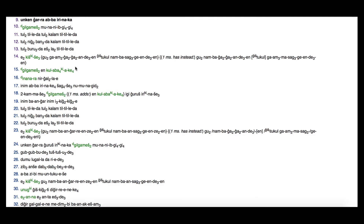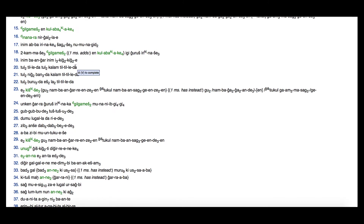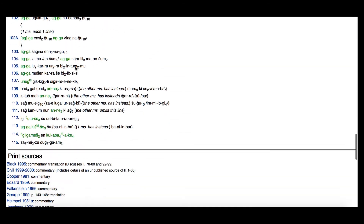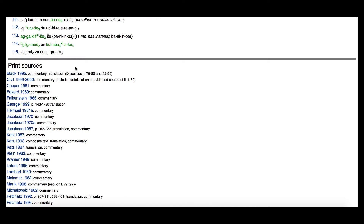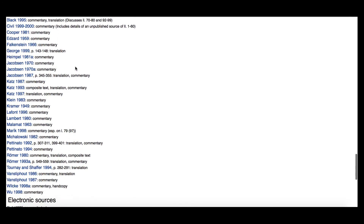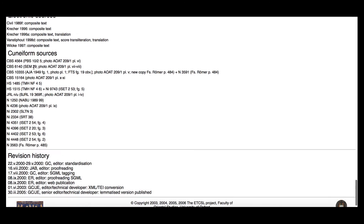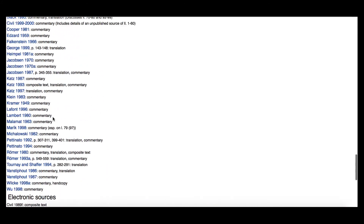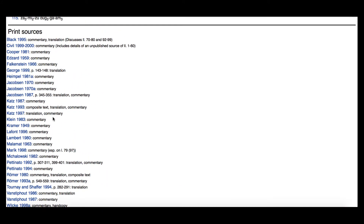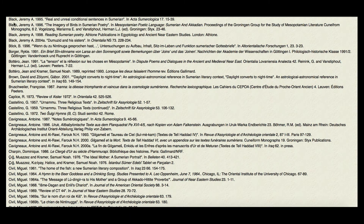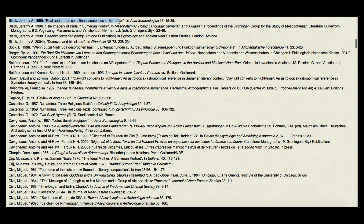Another very helpful thing that the people who put ETCSL together have done is at the bottom of the transliteration page there are a lot of resources: secondary literature and the actual cuneiform sources for the text. Starting with the secondary literature — Jeremy Black, 1995 — he has a commentary, a translation, and discusses lines 70-80 and 92-99. If you click on that, there it is: Black, 1995, 'Real and Unreal Conditional Sentences in Sumerian,' in ASJ 17, pages 15 to 39 — you can go look that up.